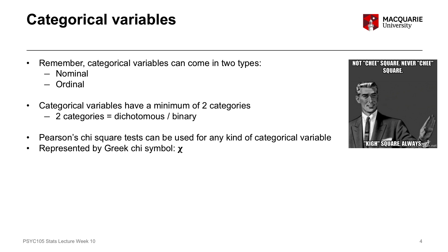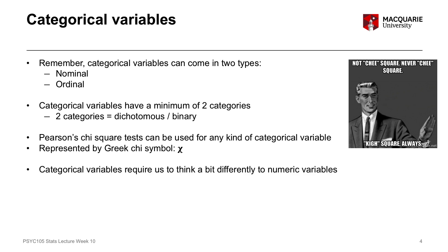The chi-square test itself is represented by a Greek symbol that looks like a wonky or italicized x — that's the Greek chi symbol. It's spelt c-h-i, but it is pronounced 'chi', just to get that pronunciation in your heads. When we're thinking about categorical variables, it's a different way of conceptualizing what we're talking about compared to numeric variables.